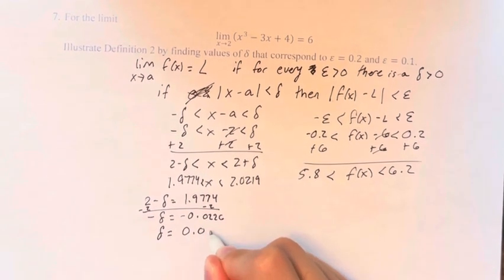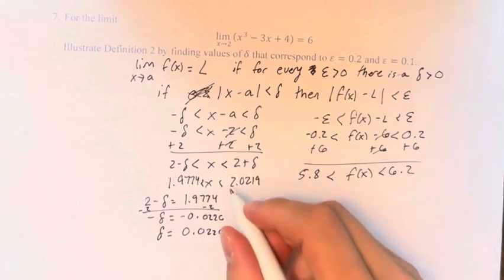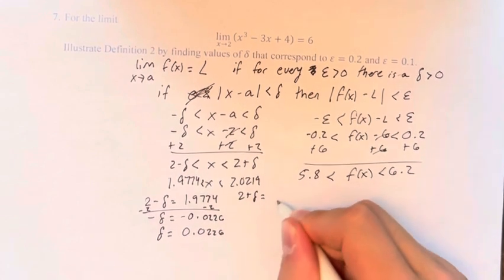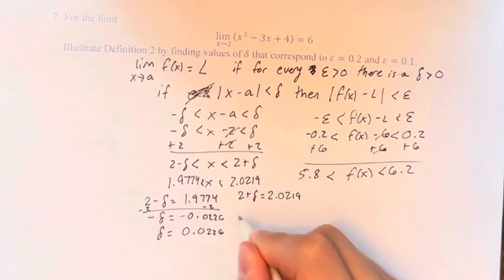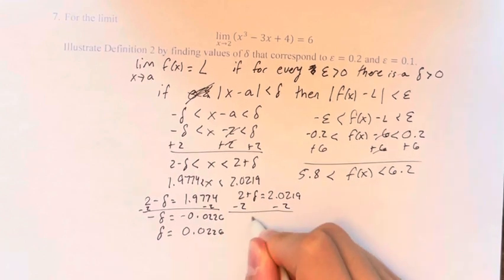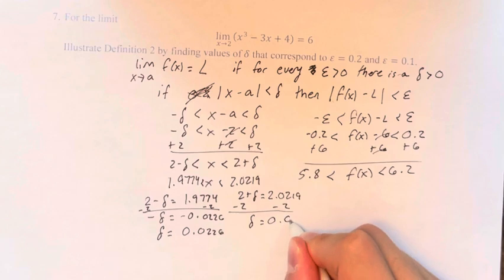And if 2 plus lambda is equal to 2.0219, subtracting 2, we get lambda is equal to 0.0219.